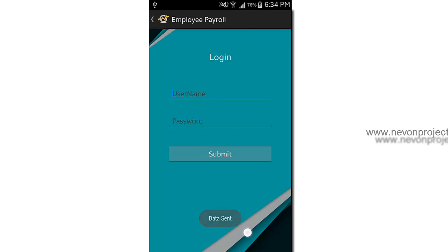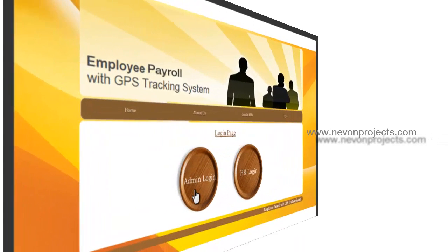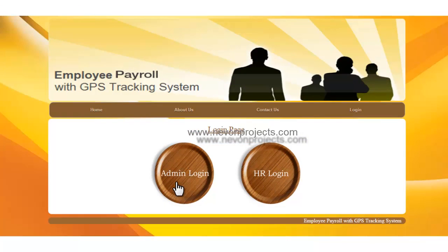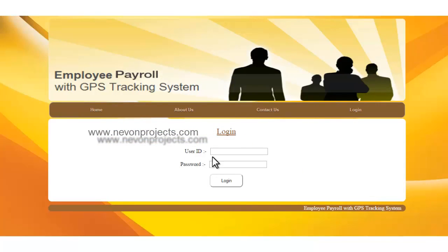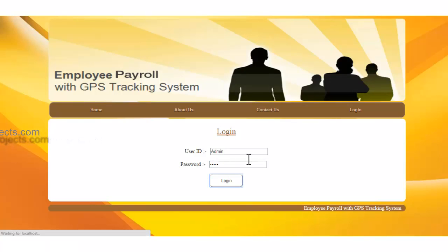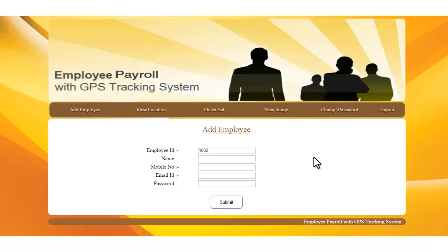Now let's look at the admin module. There are two options: admin login and HR login. Selecting admin login requires entering the admin ID and password. After logging in, you get the options of add employee, view location, check salary, and view image. To register an employee, you enter all their details into the system.